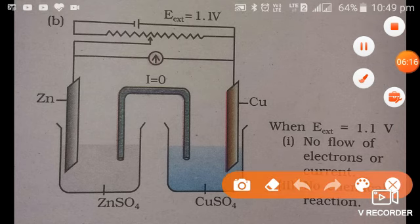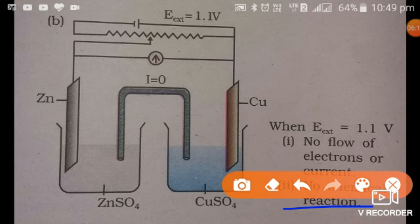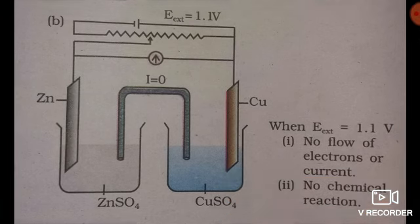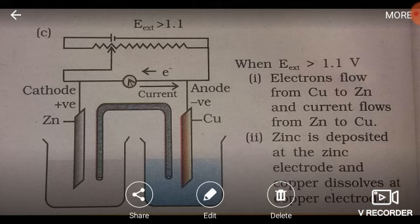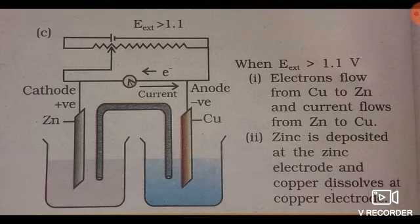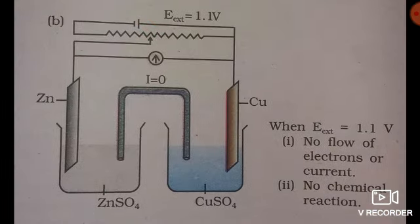The first point: there is no flow of electrons. The second important point: if there is no flow of electrons, it means there is no chemical reaction. Now in the third condition, in the Daniel cell the voltage developed by itself is equal to 1.1 volts. When the external force applied to stop the flow of electrons is just equal to 1.1 volts, there is no movement of electrons from any side.